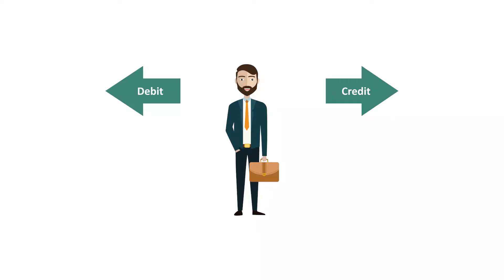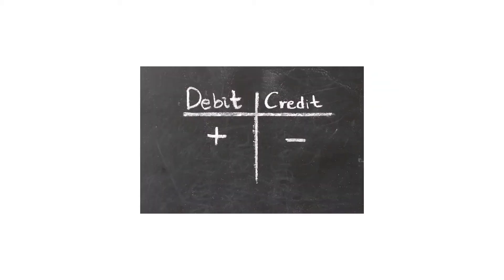From the onset of the accounting process, when we are dealing with double entry, we have been debiting and crediting accounts. For every credit entry we make, there is supposed to be a corresponding debit entry. And for every debit entry, there must be a corresponding credit entry.